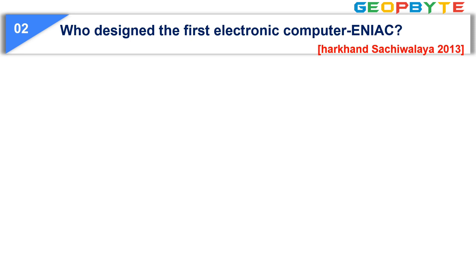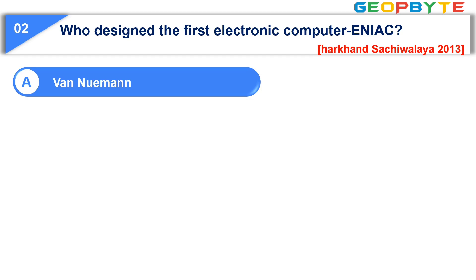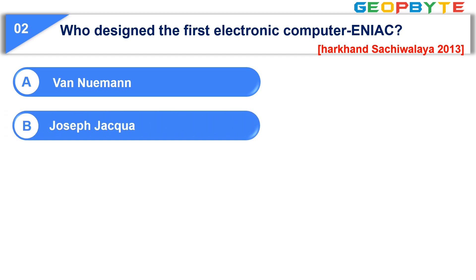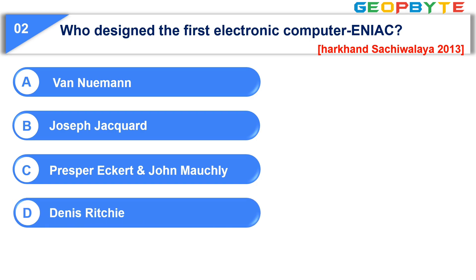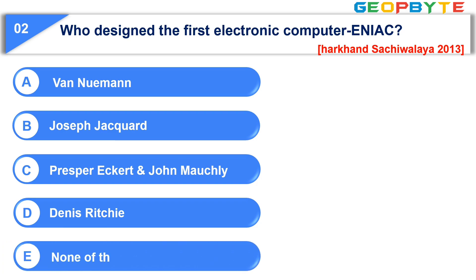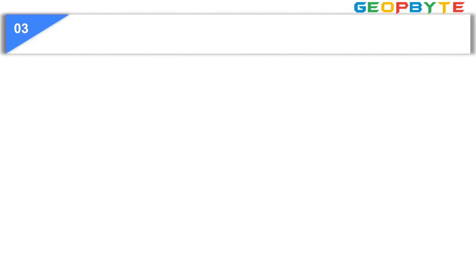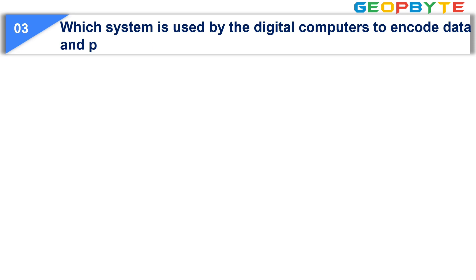Question number two: Who designed the first electronic computer? Option A: Van Neumann; option B: Joseph Jackward; option C: Presper Eckert and John Mousley; option D: Dennis Ritchie; option E: none of these. The correct answer is option C: Presper Eckert and John Mousley.